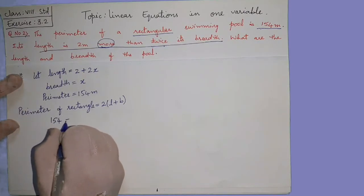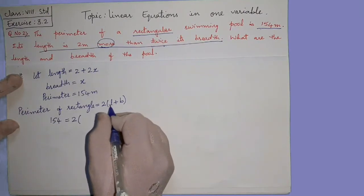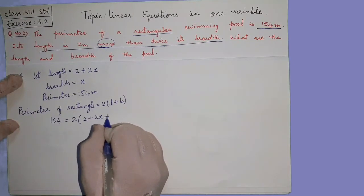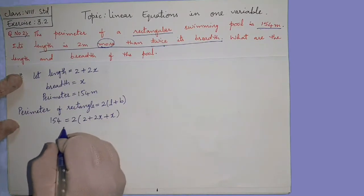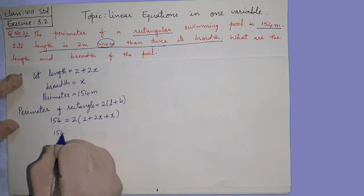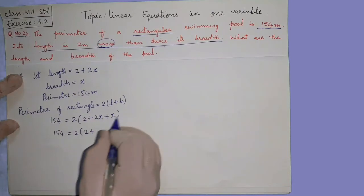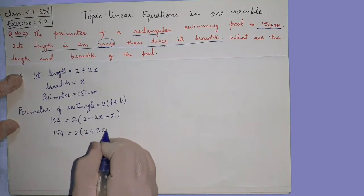Now how much is perimeter of rectangle? 154 is equal to 2 as it is. Length ki place phe 2 plus 2x, breadth ki place phe x. Now 154 is equal to 2, it is bracket, it is into 2 plus 2x plus x is 3x.